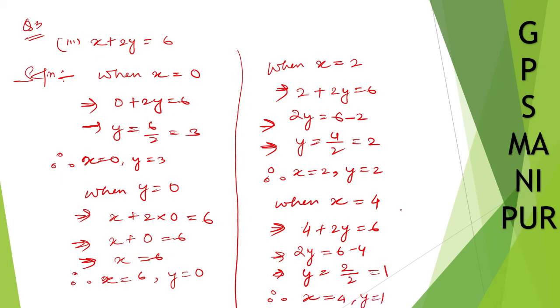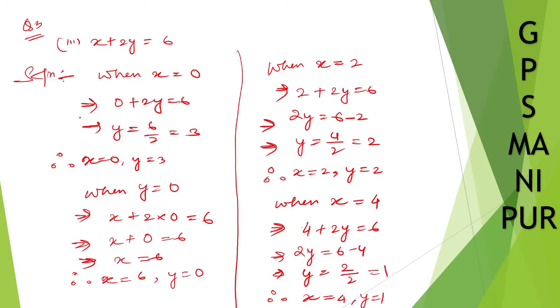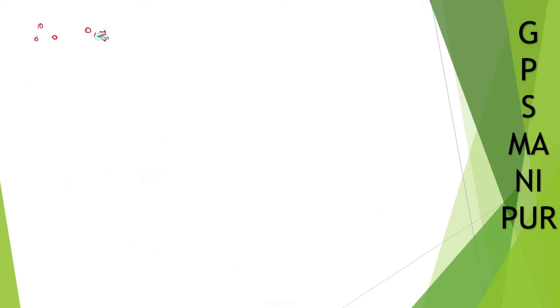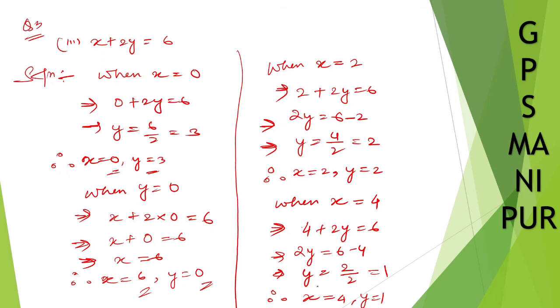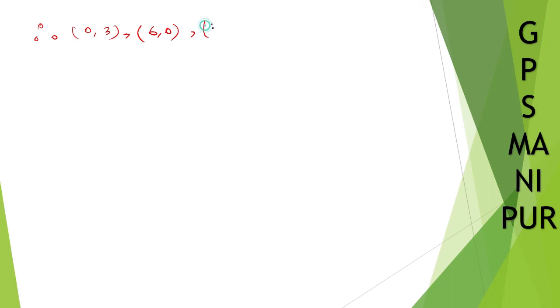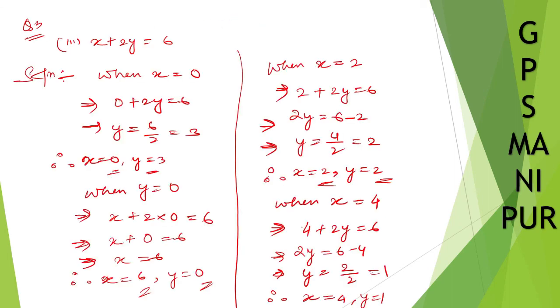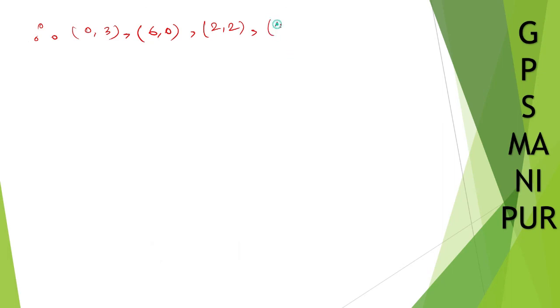So we can write down the four solutions: x is 0, y is 3; x is 6, y is 0; x is 2, y is 2; and x is 4, y is 1. These are 4 different solutions.